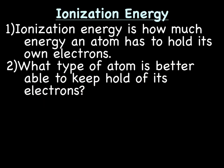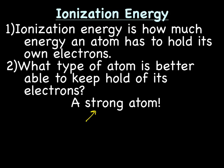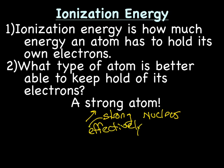What type of atom is better able to keep hold of its own electrons? Or, in what type of atom would it take a lot of energy to remove an electron? Well, an atom with a strong nucleus — effectively strong, looking at number of protons versus number of energy levels. You're going to have a greater ionization energy, meaning it takes more energy to remove a valence electron from an atom that has an effectively strong nucleus.